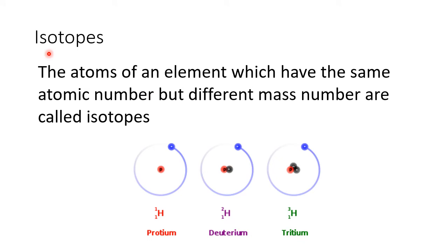In today's lesson we'll discuss the different types of nuclei. The first one is isotopes. Atoms or elements which have the same atomic number but different mass number are called isotopes. For a chemical element written as X with atomic number Z and mass number A, Z denotes the number of protons (atomic number), and A is the mass number denoting the total number of nucleons — protons and neutrons.